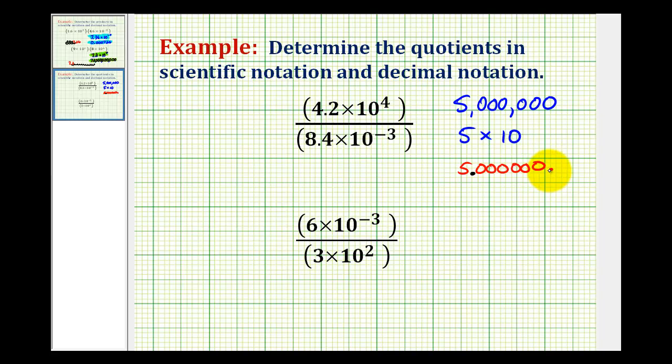And the power is determined by how many places we move the decimal. So we moved it 1, 2, 3, 4, 5, 6. And that's going to be a positive 6. And the way I remember this is that when you multiply something by 10 to a positive power this number is going to get larger. And we did start with a large number. So the exponent does have to be positive.